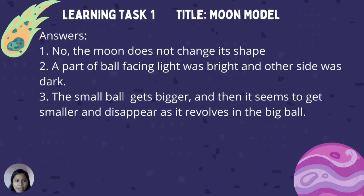These are the correct answers. For Number 1 — No, the moon does not change its shape. Number 2 — A part of the ball facing the light was bright and the other side was dark. Number 3 — The small ball gets bigger and then it seems to get smaller and disappear as it orbits around the big ball.